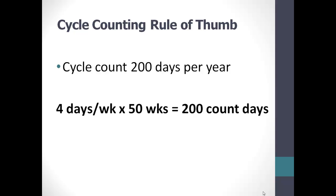Cycle counting is where you count a statistically significant cross-section of your items often enough so that what you counted represents all of the stuff. If we're counting frequently — and the rule of thumb is count 200 days a year, that is four days a week, 50 weeks out of the year, 200 count days — if you're counting a statistically significant cross-section of items this often, then you've counted enough stuff to represent all of the stuff. And if you fix what's wrong with enough stuff, then you fix the system.